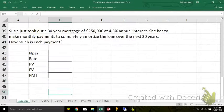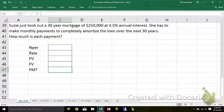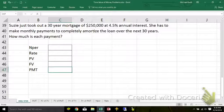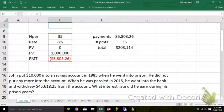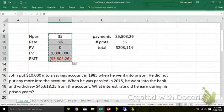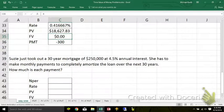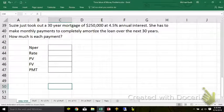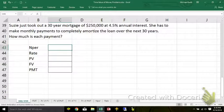And the fourth of our simple beginner problems. Susie just took out a 30 year mortgage of $250,000 at 4.5% annual interest. Got to make monthly payments. How much is each payment? This is why I use cell references. I can actually copy all this down and then just change what needs to be changed. That way I type less.